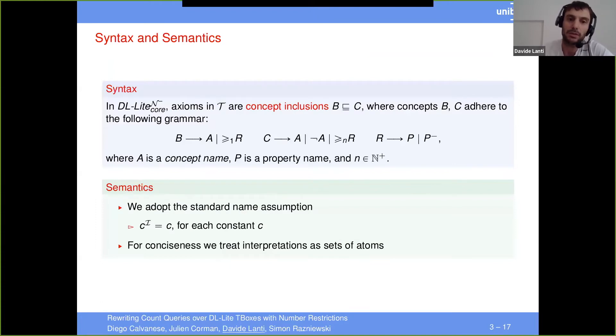Here in this talk we consider the logic DL-Lite core and minus, where essentially you have concept inclusions of this form. So you have essentially DL-Lite core, plus you have number restrictions, but only positive ones and only on the right-hand side of assumptions.